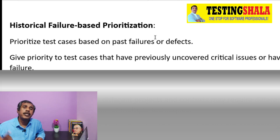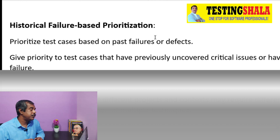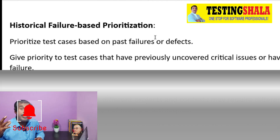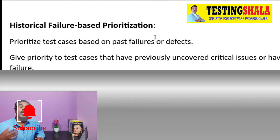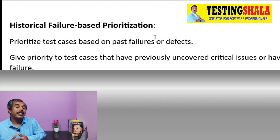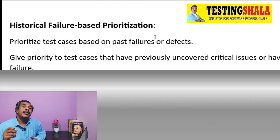The last prioritization technique is historical failures-based prioritization. If we see a history of test cases that normally fail whenever executed, we keep those test cases at high priority. Since certain test cases always fail, our job becomes clear — we should pick those test cases that are more often failing. These are the key prioritization techniques we normally adopt when executing our test cases.